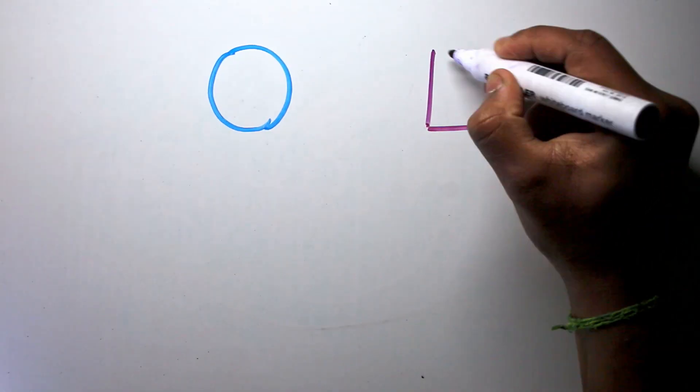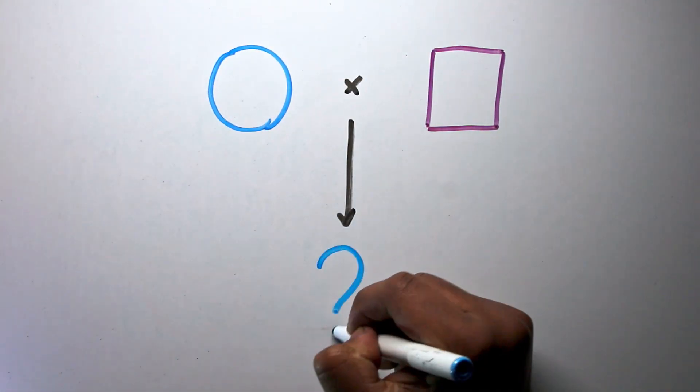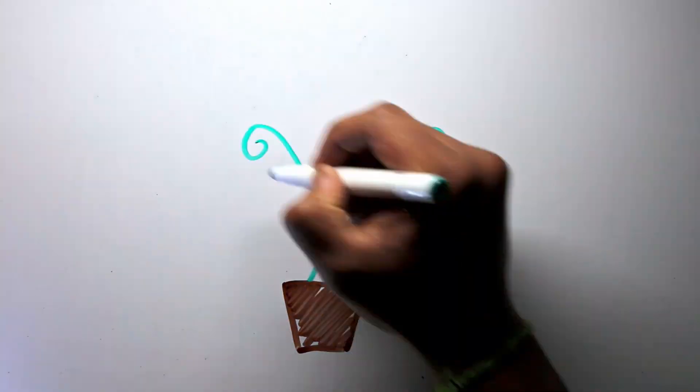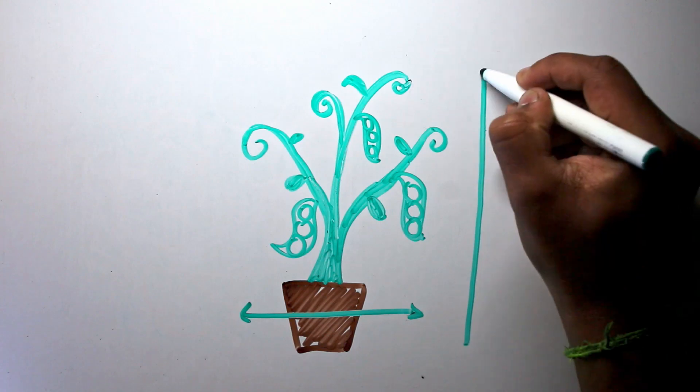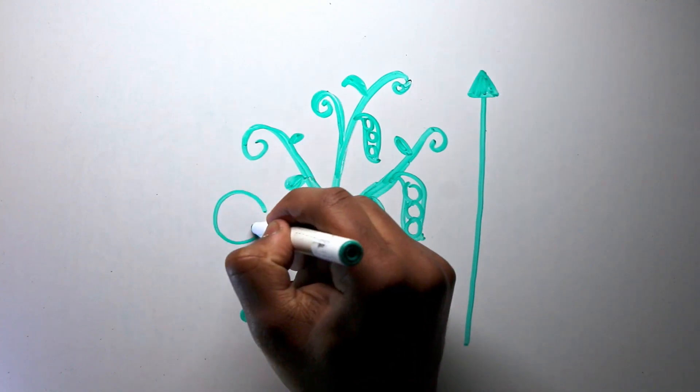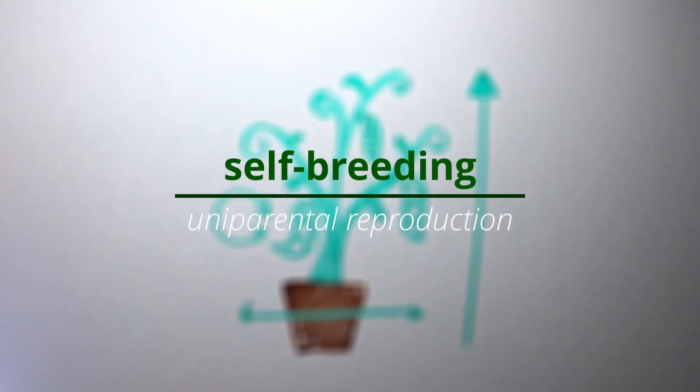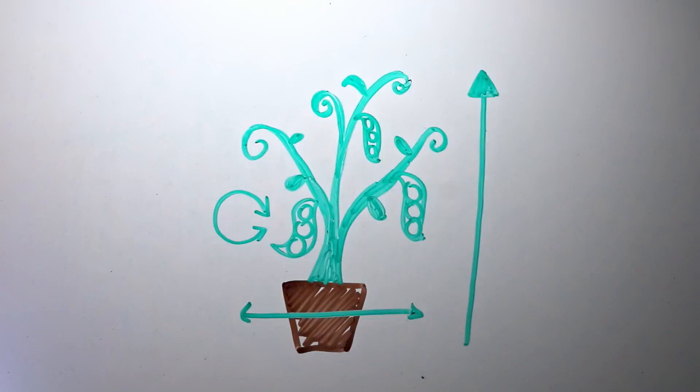So what did Mendel do? He wanted to spot patterns in how organisms bred and inherited traits. He picked pea plants to investigate, because one, they did not require much space to grow, and two, they could be self-crossed, which means you could breed a plant with itself, which turns out to be very useful.